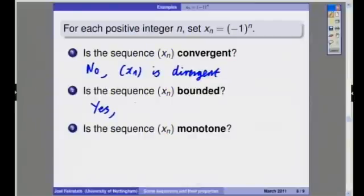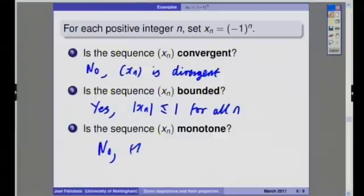Is the sequence bounded? Yes, it's bounded because again, the modulus of xn is always less than or equal to one. And is this sequence monotone? Well, no, because the terms get bigger and then smaller and then bigger and then smaller. The sequence oscillates.